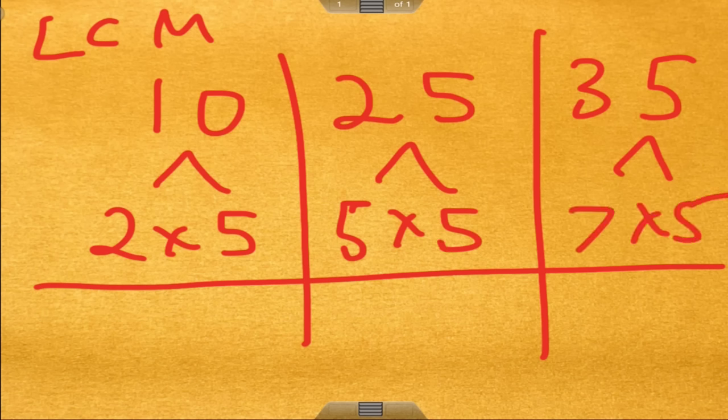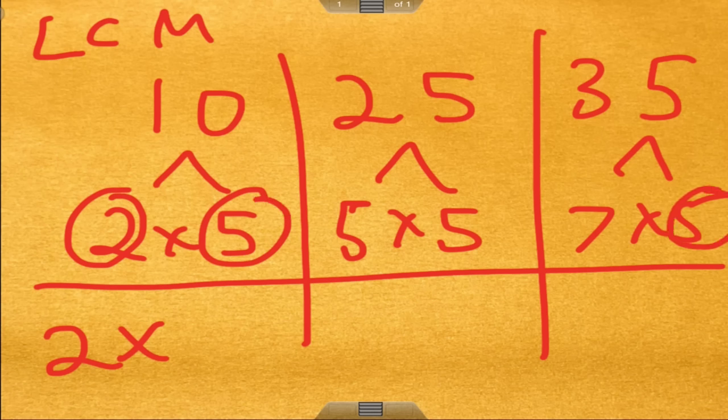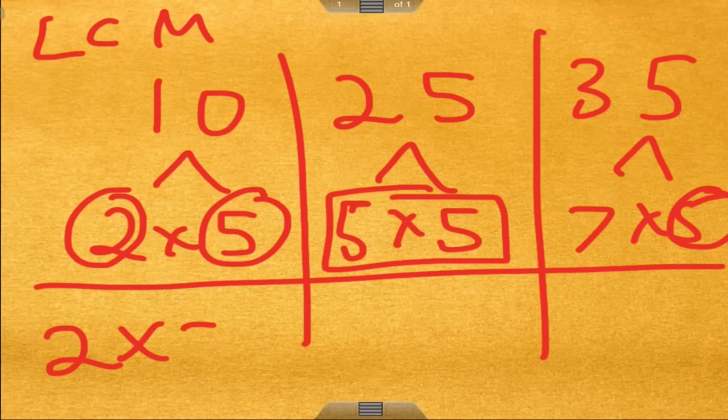So let's look at all these sets of numbers. I see a 2 is here, right here. I see only one 2, so we need to use that 2. I see a 5 here, a 5 here in 35, and two 5s here. So we've got to take the biggest one, and the biggest one is 5 squared, the two 5s.